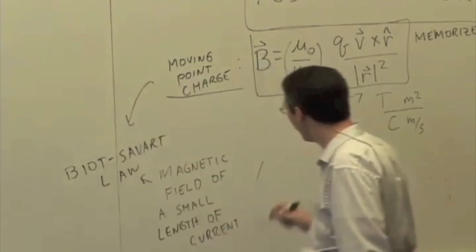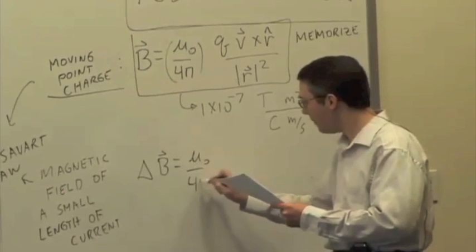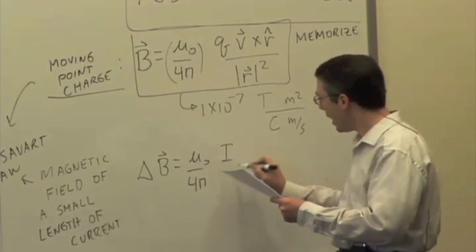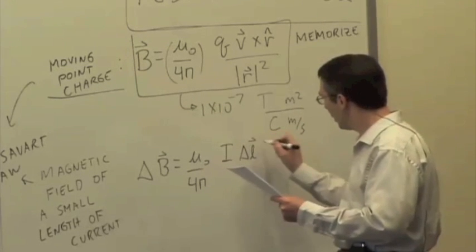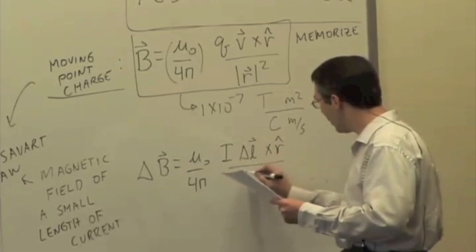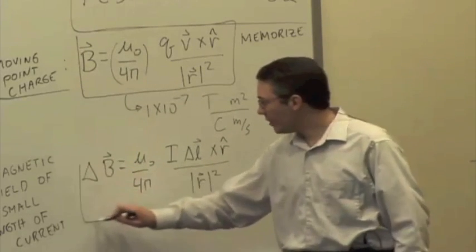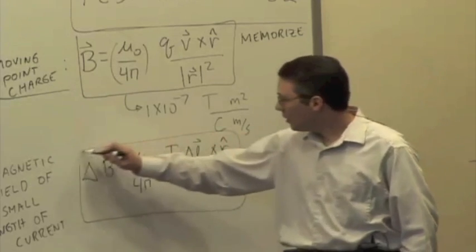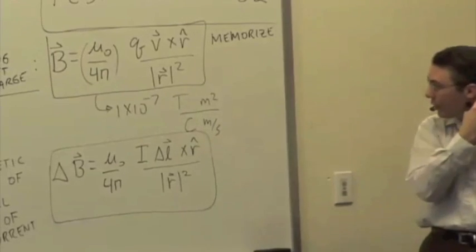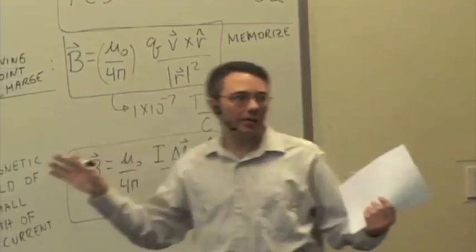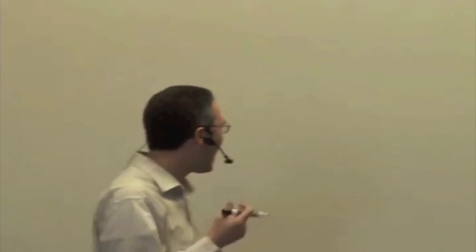Both of these are different versions of the Biot-Savart law. The formula is: delta B equals mu naught over 4 pi times capital I delta L cross R-hat over the magnitude of R squared. This version is for use when you're trying to calculate the magnetic field of a current-carrying distribution, like a length of wire or a loop of wire that has a current in it.